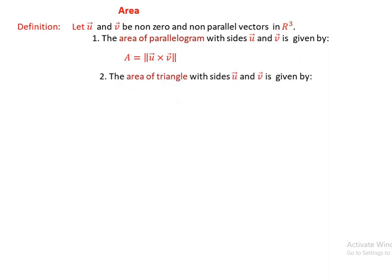The area of the triangle with sides u and v is also given as one half of the norm of u cross v. In other words, half the area of the parallelogram is the area of the triangle. So A, the area of the triangle with sides u and v, equals one half times norm of u cross v.